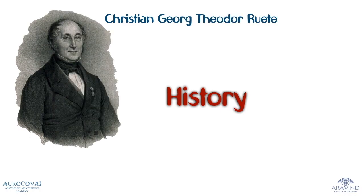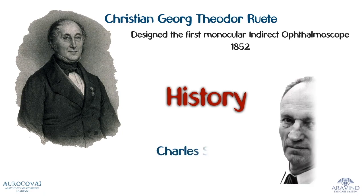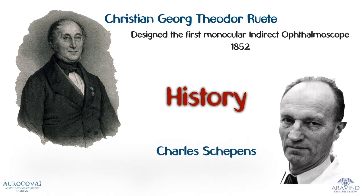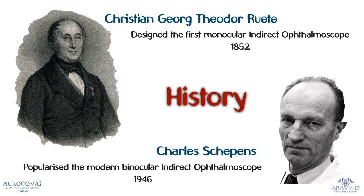To start with the history, the monocular indirect ophthalmoscope was first devised by Christian Ruete. Its use was then popularized by Charles Schepens.